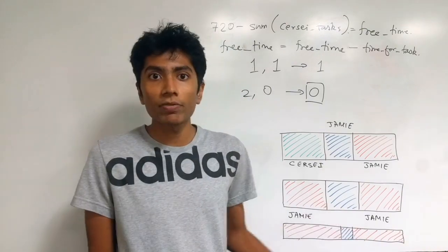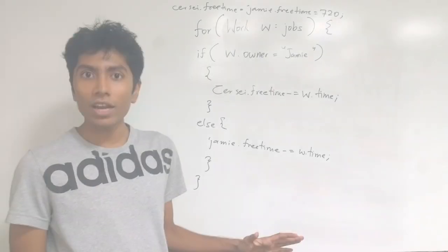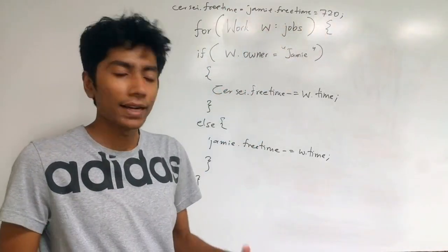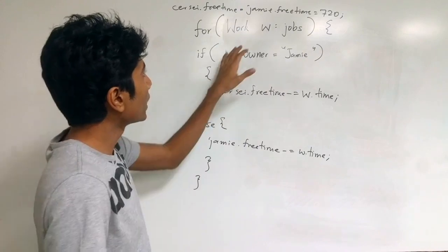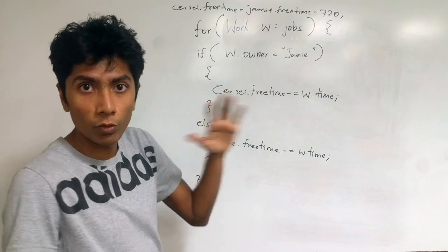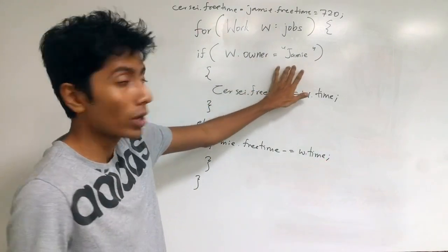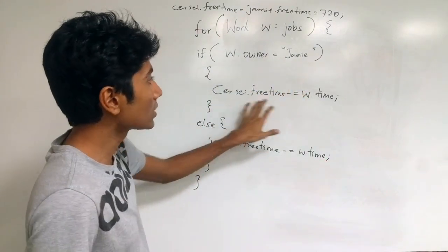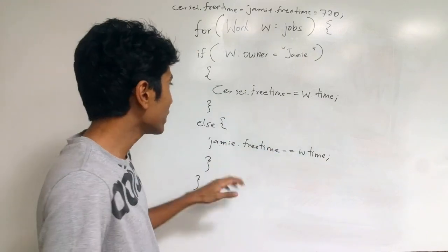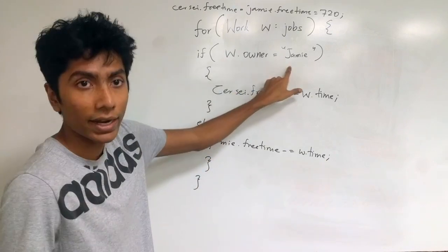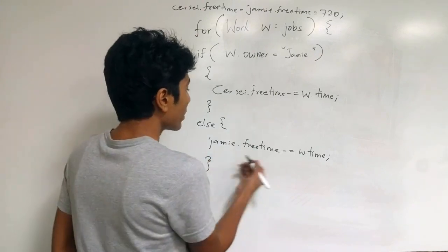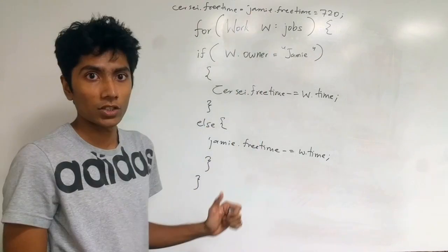For this strategy we are going to be using a data structure called a priority queue. This is how we will start our algorithm. Cersei and Jaime initially have free time for 720 minutes in a day, that is 12 hours. Each person goes out to do some jobs. So in the entire jobs array, you find some work to be done. And if the person who has to go out to work is Jaime, then Cersei's free time is reduced by the amount of time that work will be required. Similarly, Jaime's free time will be reduced if it's not Jaime and if it's Cersei who's going out to work.